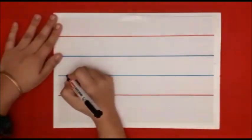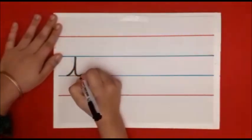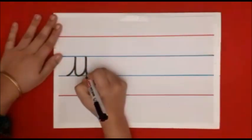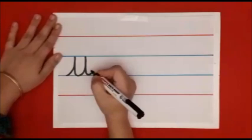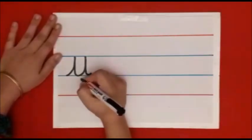Start with the blue line. Go up, come back, go up again, come back and make a small tail. This is letter U.